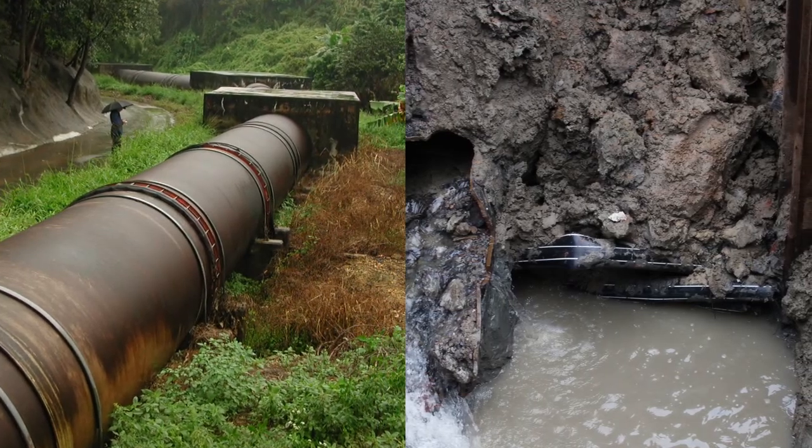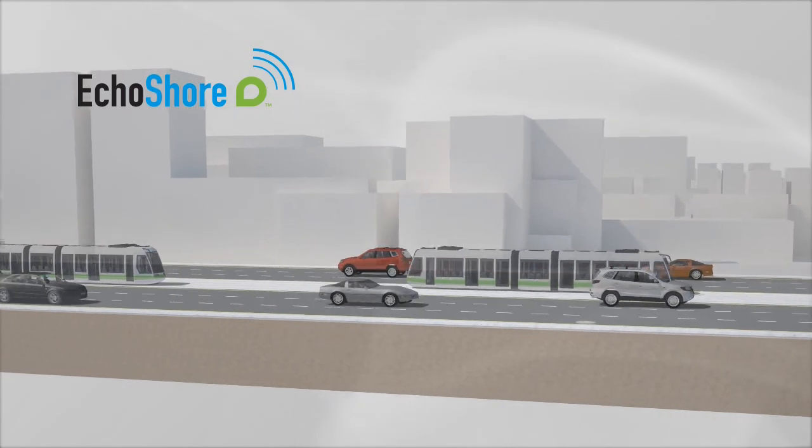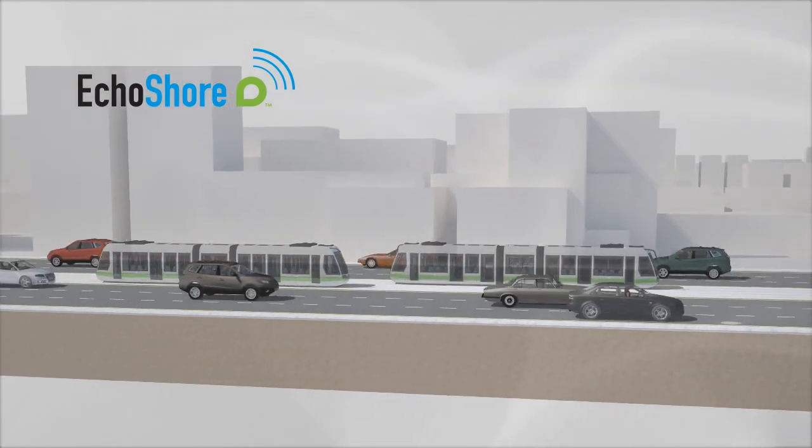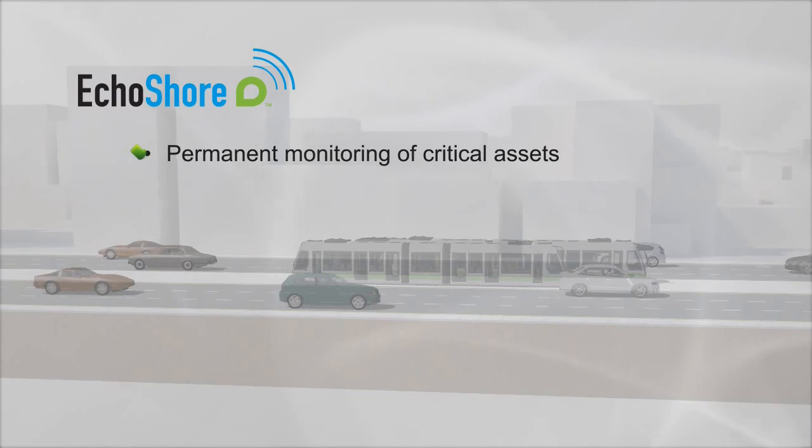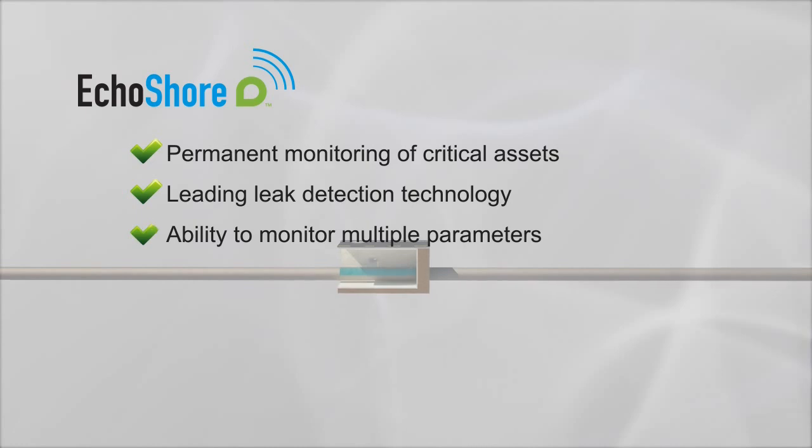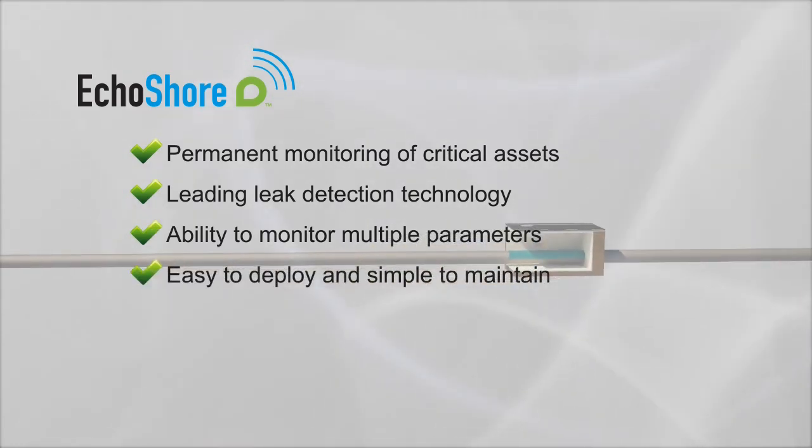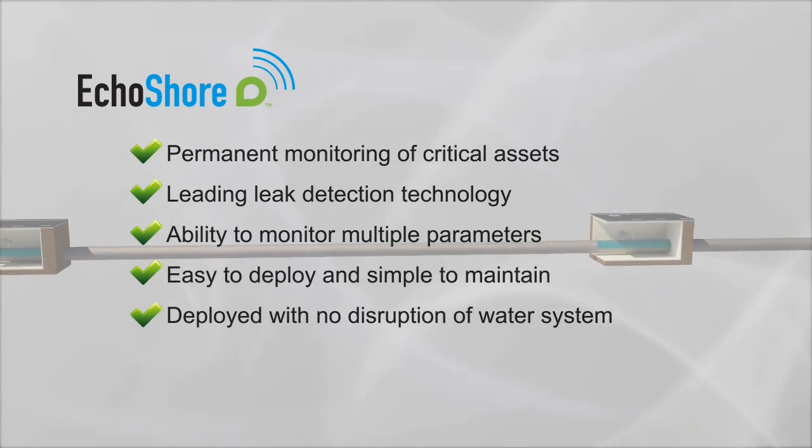EchoShore is an advanced technology platform that provides unmatched capabilities: permanent monitoring of critical assets, leading leak detection technology, ability to monitor multiple parameters, easy to deploy and simple to maintain, installation with no disruption of the water system.